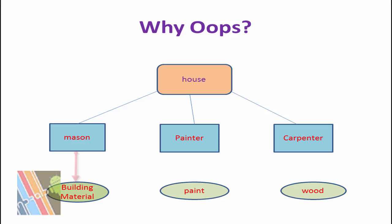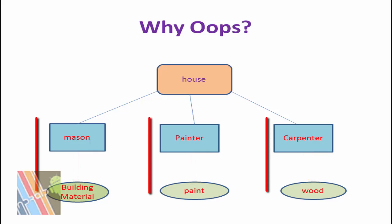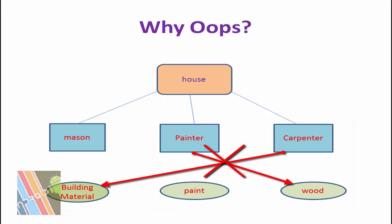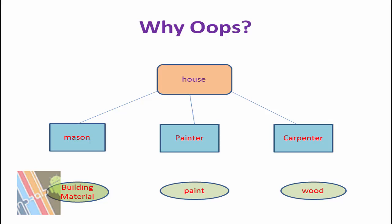The Mason requires building material to build the house, the Painter requires paint, and the Carpenter requires wood. Now you can employ them in such a way during construction so that none of them can steal or waste the others' material — that is, the Carpenter cannot use the Painter's material, and the Painter cannot use the wood. That is the main perspective of object-oriented programming: to restrict the access of your data.